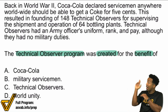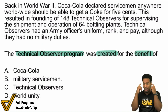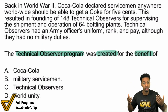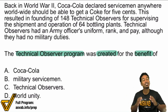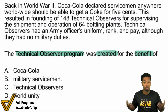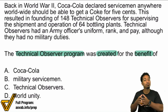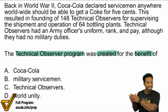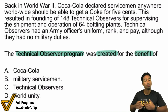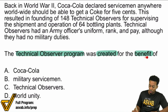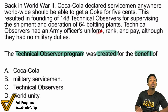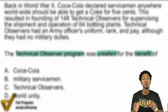Remember, the passage is the resource here, not your mind, not your understanding of history. This is not historical comprehension; this is paragraph comprehension. No matter what you actually know to be true, remember that it has to be supported or corroborated by the passage for it to be the correct answer. So with that said, we know what the question is — we're looking for who benefited from the Technical Observer Program according to the passage.